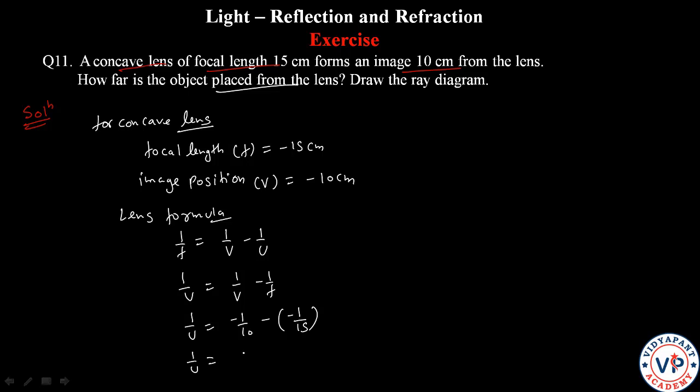1/u = 1/v - 1/f = -1/10 + 1/15. If we calculate with LCM 30, we get minus 3 plus 2, which equals minus 1/30. So the u value is minus 30 cm.